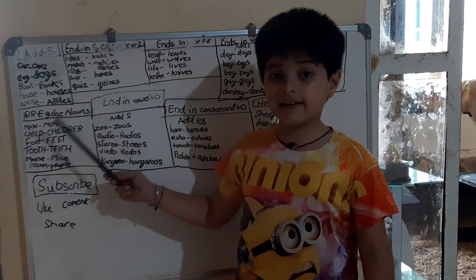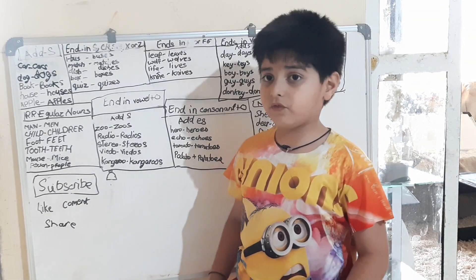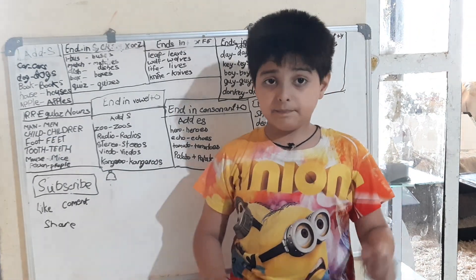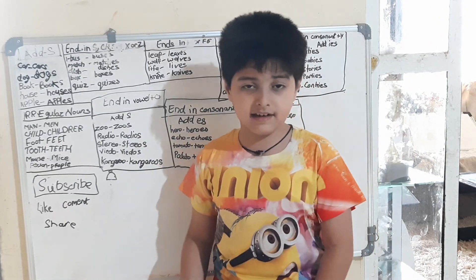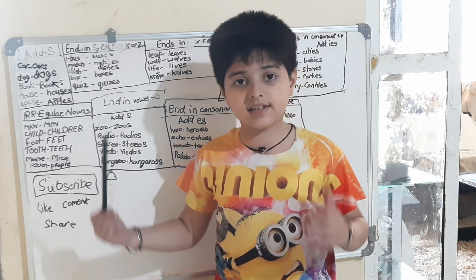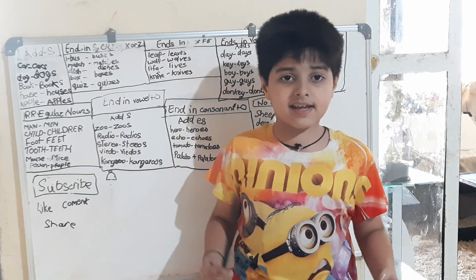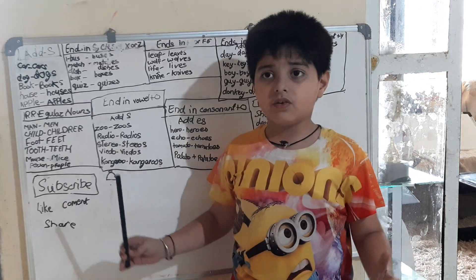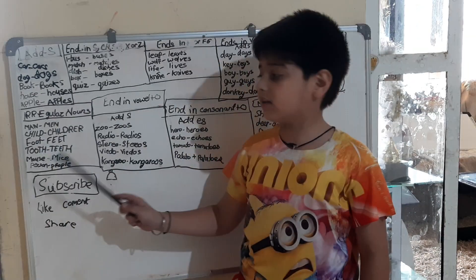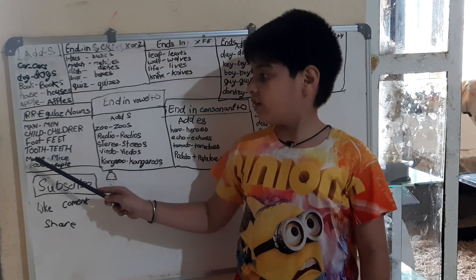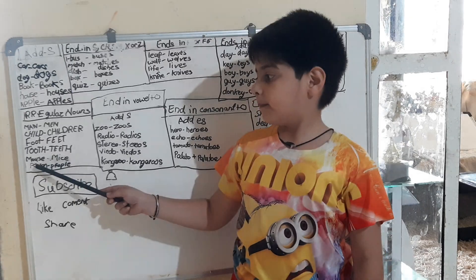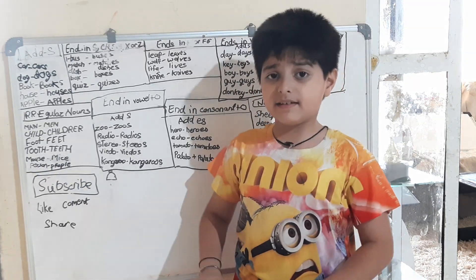We will go with irregular nouns. For example, man becomes men — the A is changed to E in the plural. Let's see all: child becomes children, foot becomes feet, tooth becomes teeth, mouse becomes mice, person becomes people. Like this.